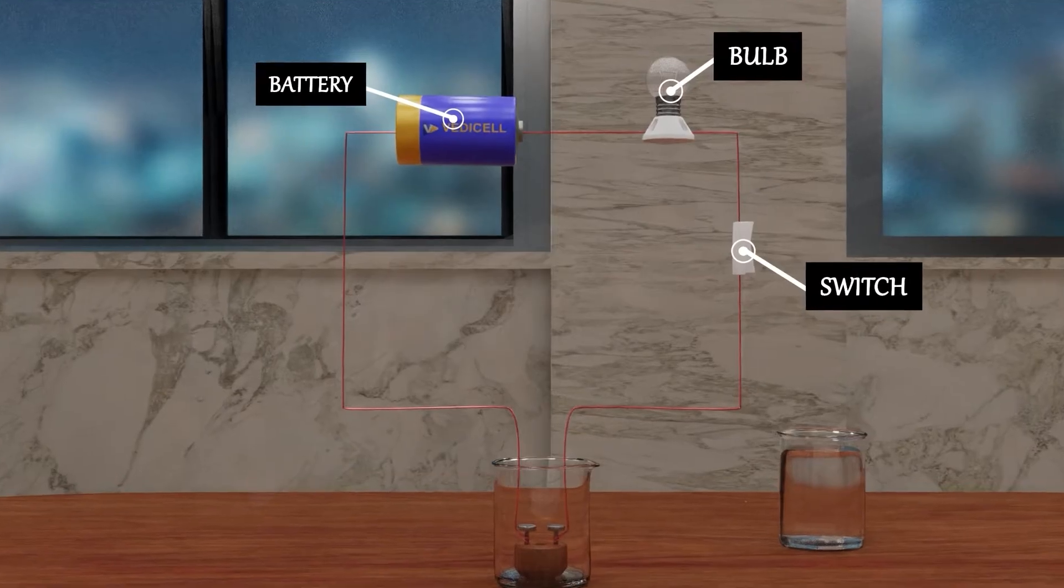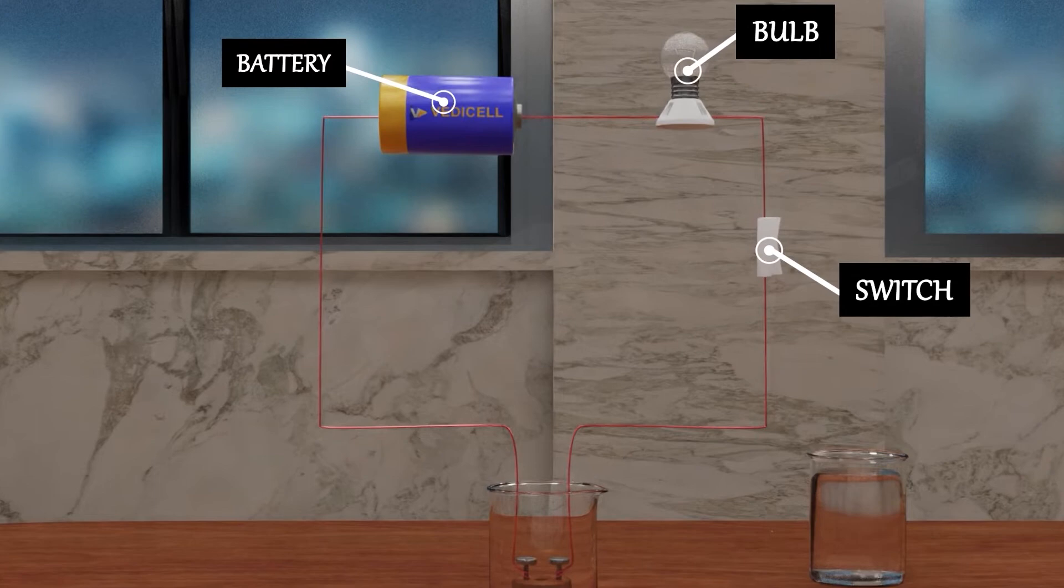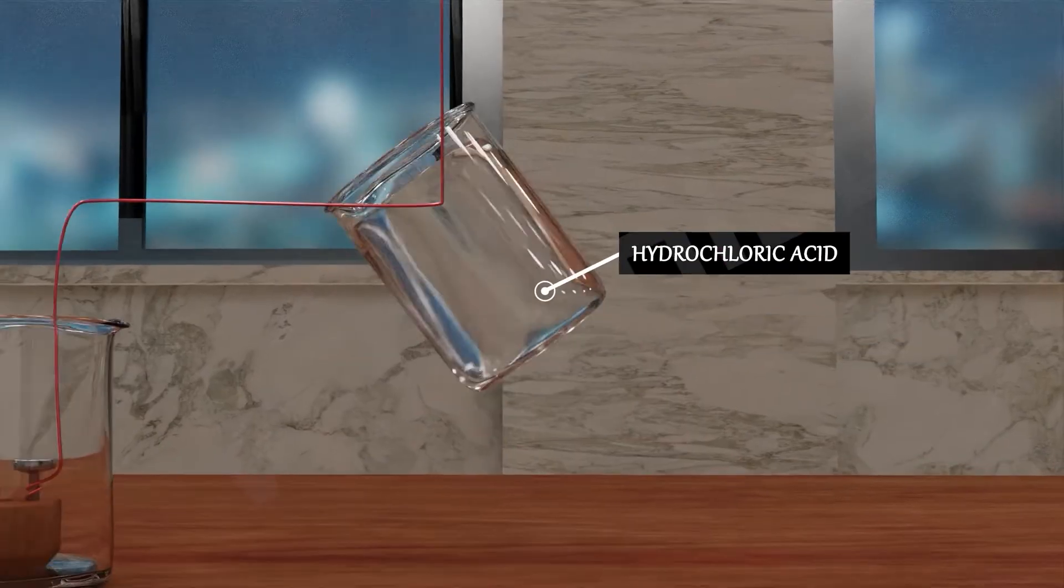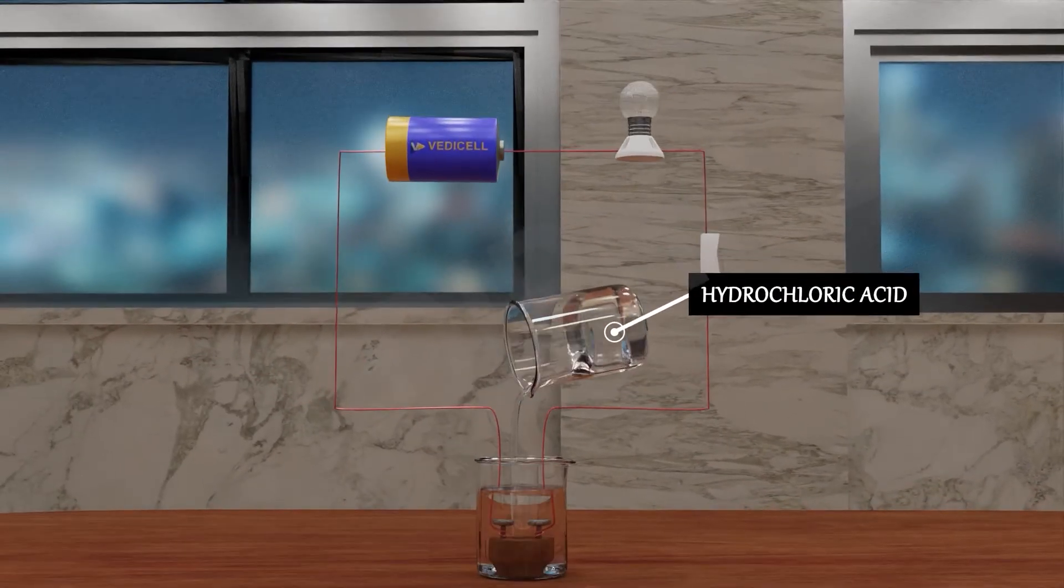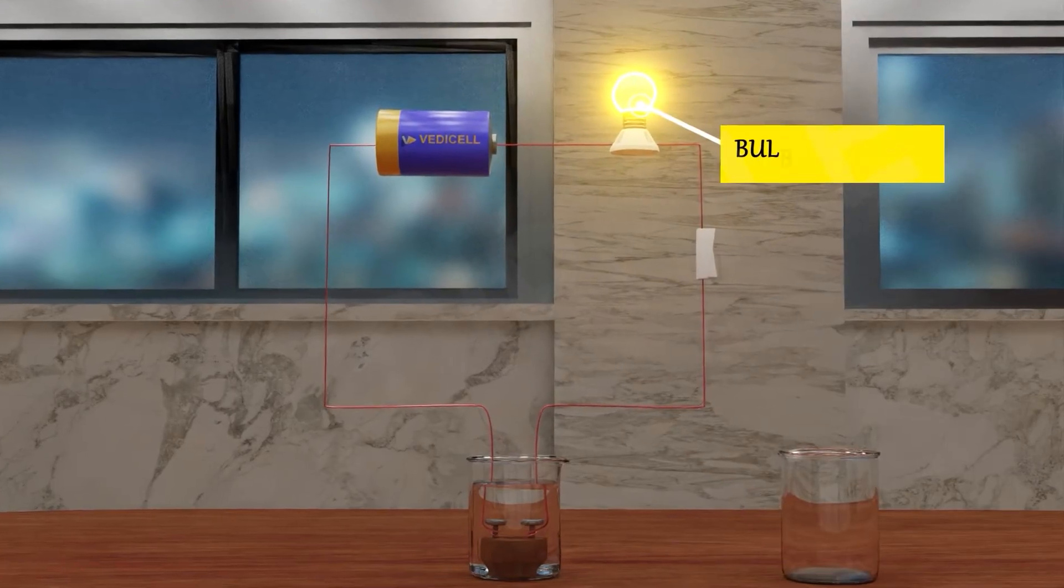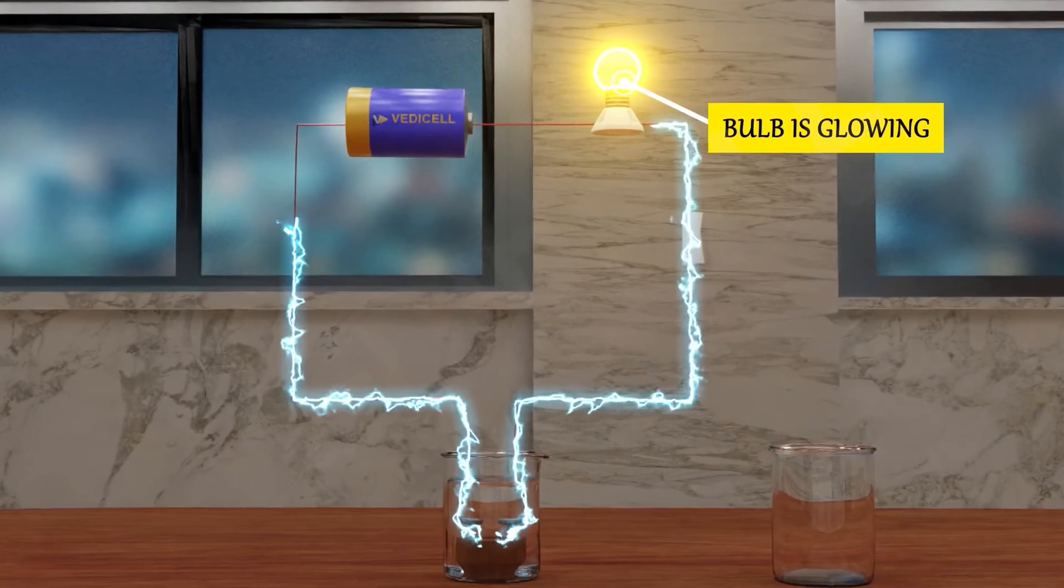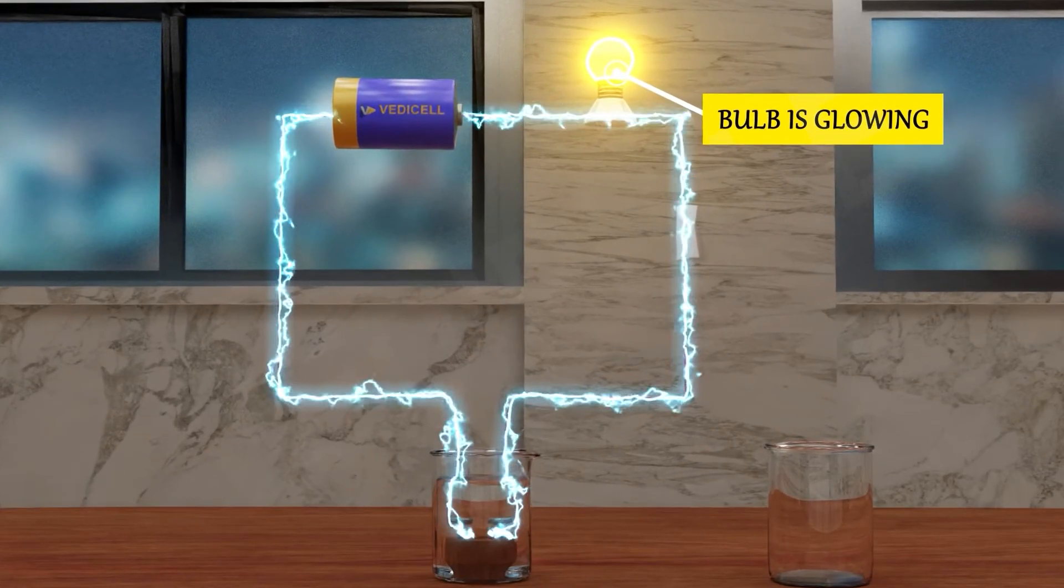Now, we have to see whether acid conducts electricity or not. You can see here, if I pour HCl in the solution, wow, the bulb is glowing. That means acid solution in water conducts electricity.